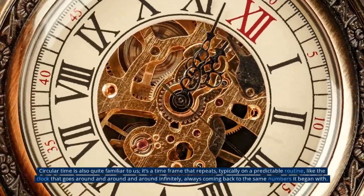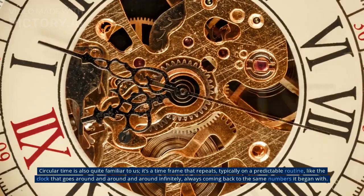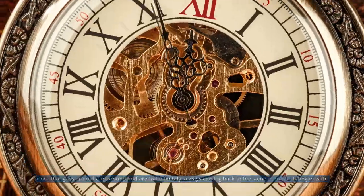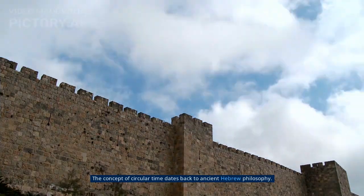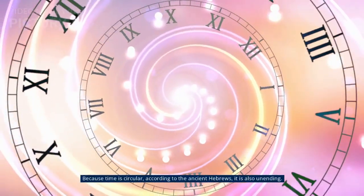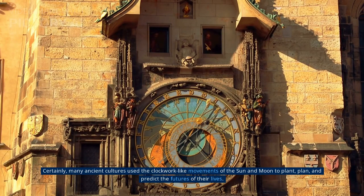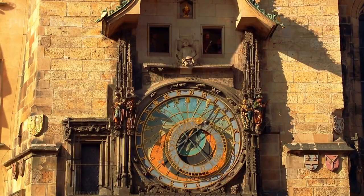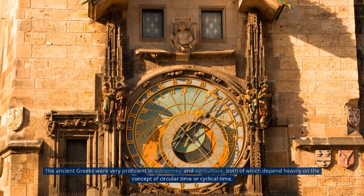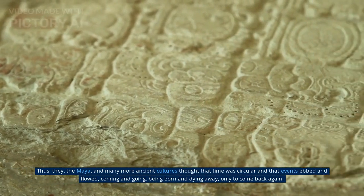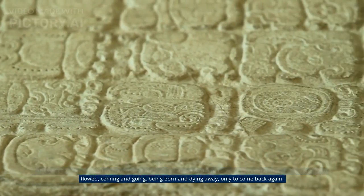Number 2: Circular Time. Circular time is also quite familiar to us. It's a time frame that repeats, typically on a predictable routine, like the clock that goes around and around infinitely, always coming back to the same numbers it began with. We might also look at weeks, months, and years as circular as well. The concept of circular time dates back to ancient Hebrew philosophy. Because time is circular, according to the ancient Hebrews, it is also unending. Certainly, many ancient cultures use the clockwork-like movements of the sun and moon to plant, plan, and predict the futures of their lives. The ancient Greeks were very proficient in astronomy and agriculture, both of which depend heavily on the concept of circular time or cyclical time. Thus, they, the Maya, and many more ancient cultures thought that time was circular and that events ebbed and flowed, coming and going, being born, and dying away, only to come back again.